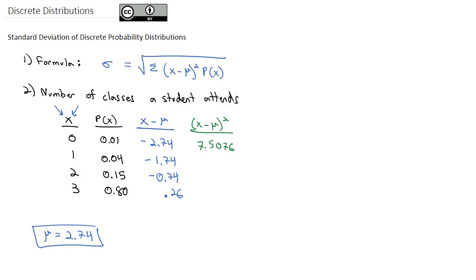Square 1.74, which is 3.0276. Square 0.74, which is 0.5476, and square the 0.26, which is 0.0676.